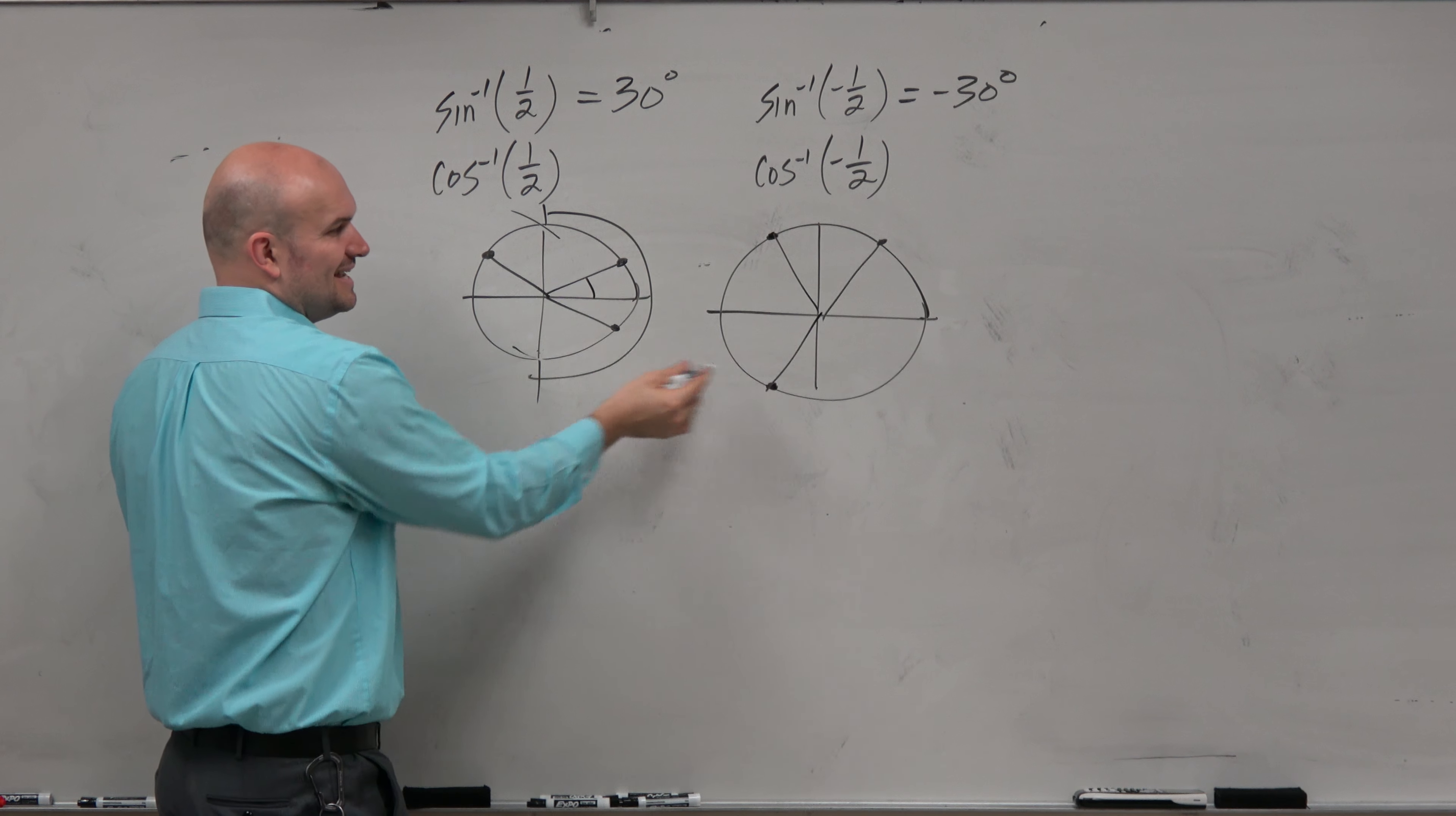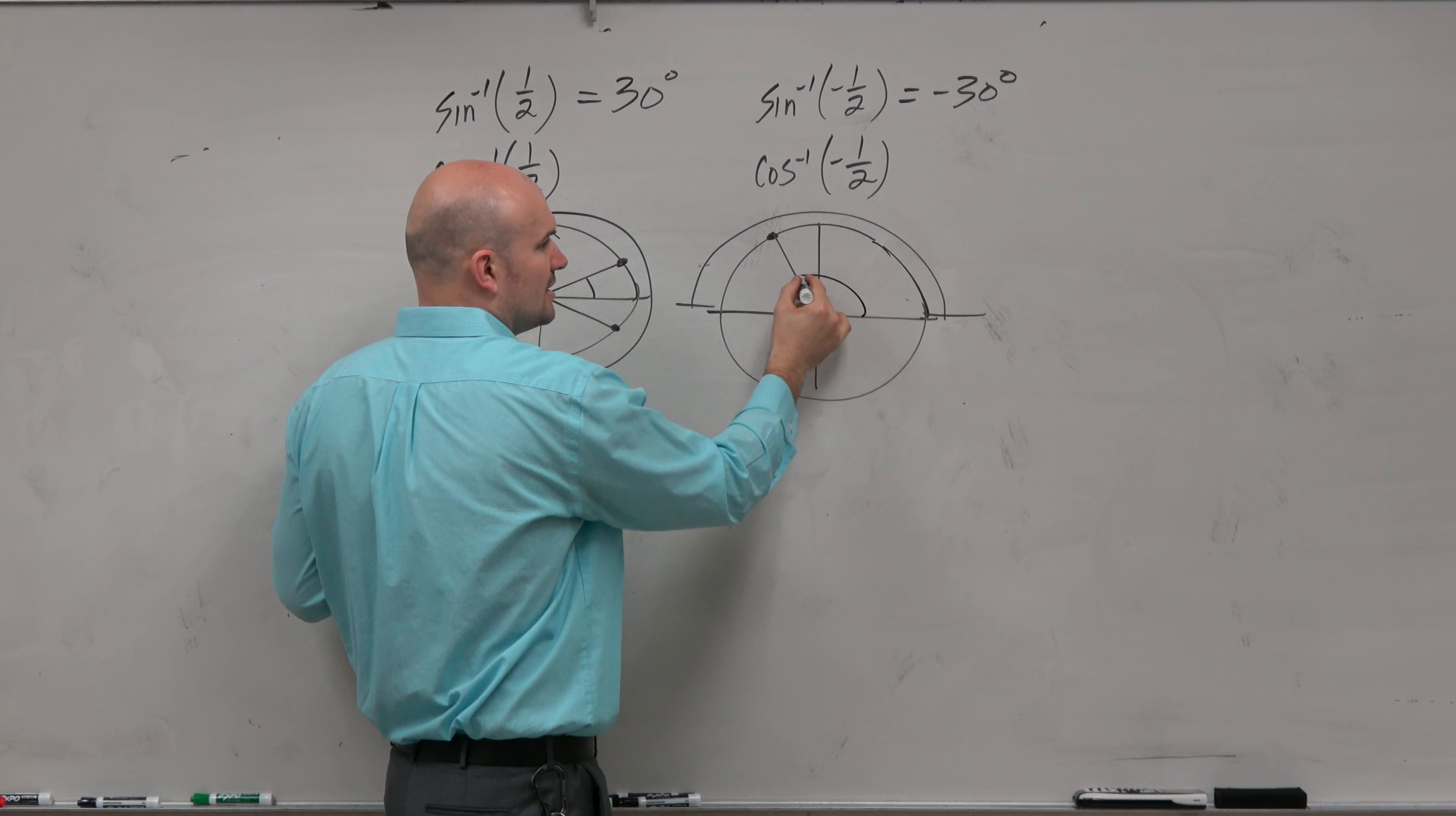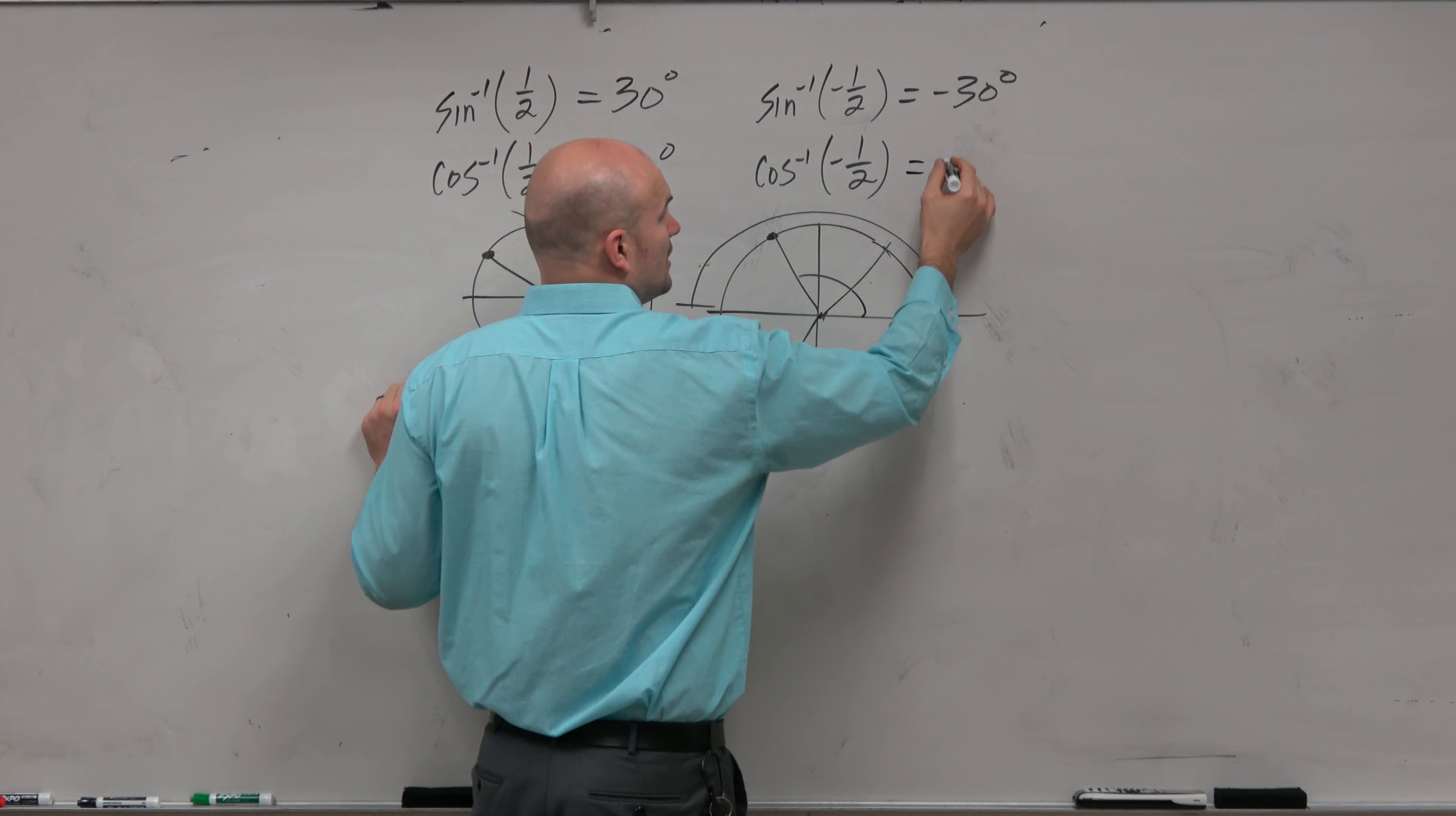But again, it can't be down here, because if you remember, the restriction for cosine inverse, or the restriction upon or given to us on the cosine inverse, is asked to be in the first and the second quadrant. So therefore, you can see that our answer is there. So for cosine of 1 half, that was there. Cosine of 1 half is going to be 60 degrees. And then cosine of negative 1 half, because the cosine is negative over here, it's going to be 120 degrees.